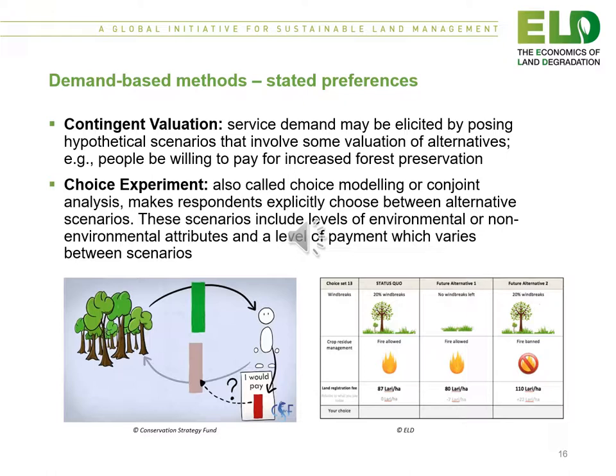The third method is contingent valuation, where service demand may be elicited by posing hypothetical scenarios that involve some valuation of alternatives — for example, people willing to pay for increased forest preservation. The fourth is a choice experiment, also called choice modelling or conjoint analysis, which makes respondents explicitly choose between alternative scenarios. These scenarios include levels of environmental or non-environmental attributes and a level of payment which varies between scenarios.